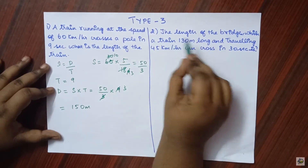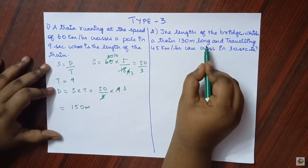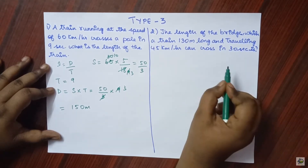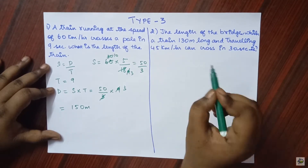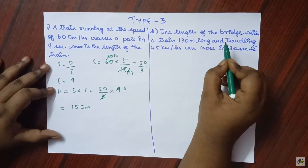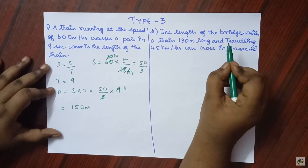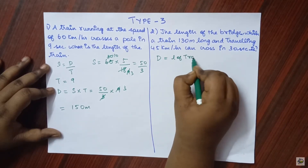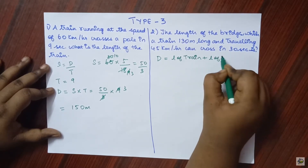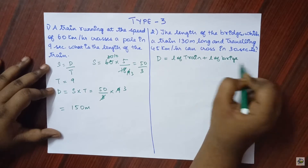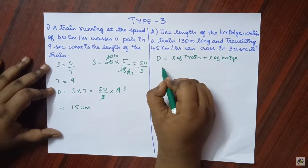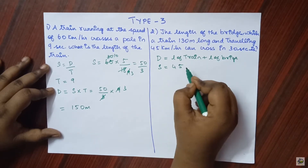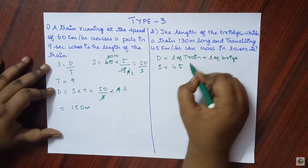Let us do another sum. The length of the bridge which a train 130 meters long, traveling at 45 kilometers per hour, can cross in 30 seconds — we have to find the length of the bridge. Here the distance covered is the length of the train plus the length of the bridge. We have to find the length of the bridge. The length of the train is given as 130 meters.